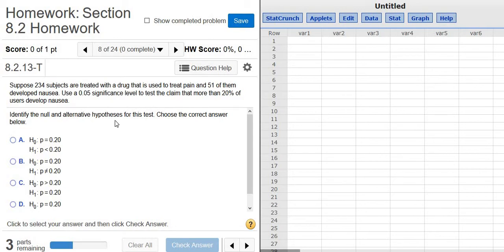In this problem we have to do a hypothesis test for a proportion. Suppose 234 subjects are treated with a drug that is used to treat pain and 51 of them develop nausea. Use a 0.05 significance level to test the claim that more than 20% of them develop nausea.